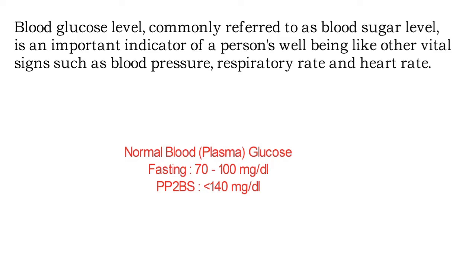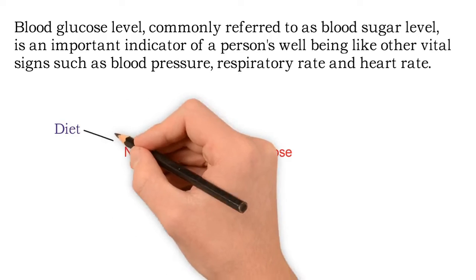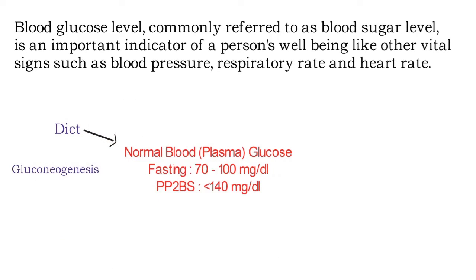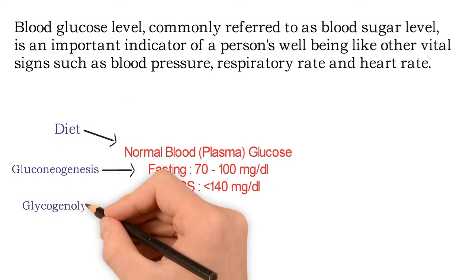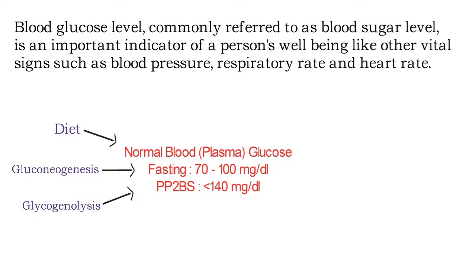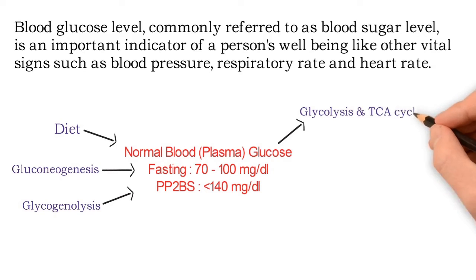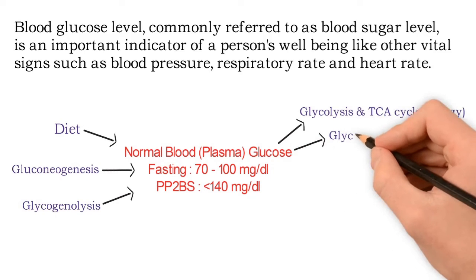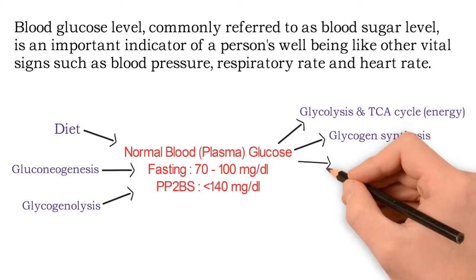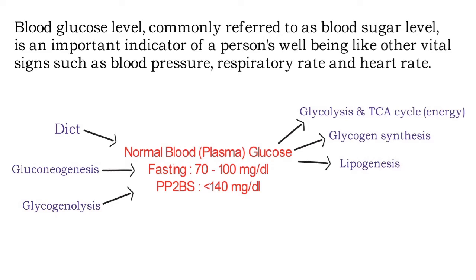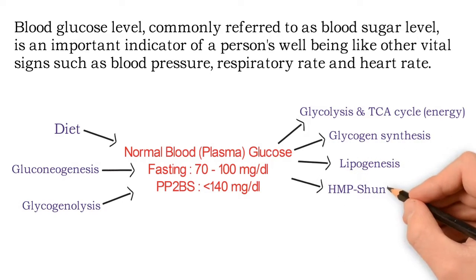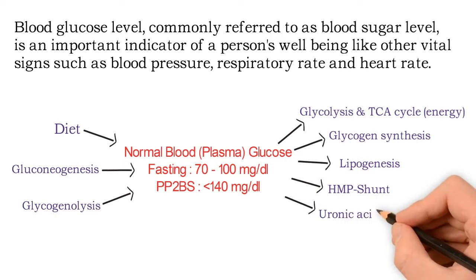It reflects the net balance of availability and utilization of the major metabolic fuel, that is glucose, by the body. Glucose will be available from diet through gluconeogenesis, glycogenesis, and glycogenolysis, and it will be utilized through glycolysis, the TCA cycle, glycogen synthesis, lipogenesis, the HMP pathway, and formation of glucuronic acid through the uronic acid pathway.